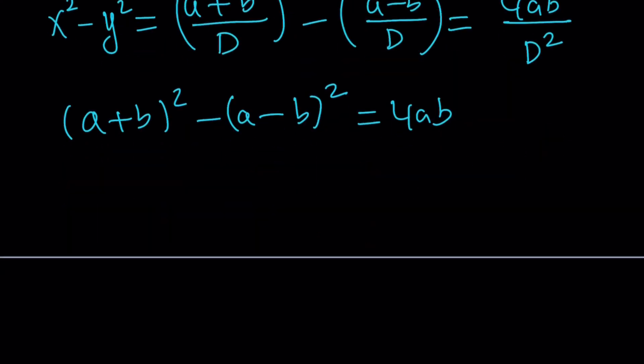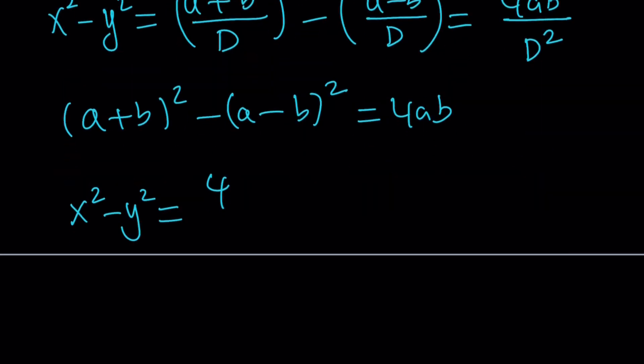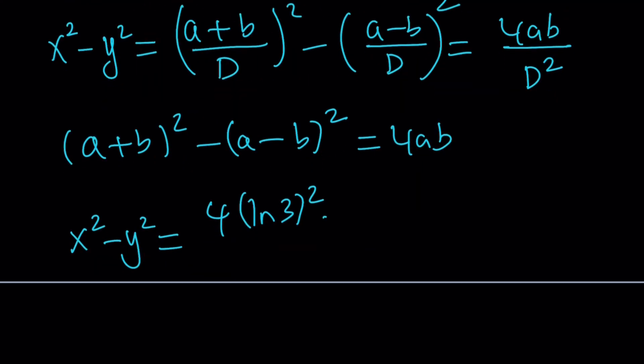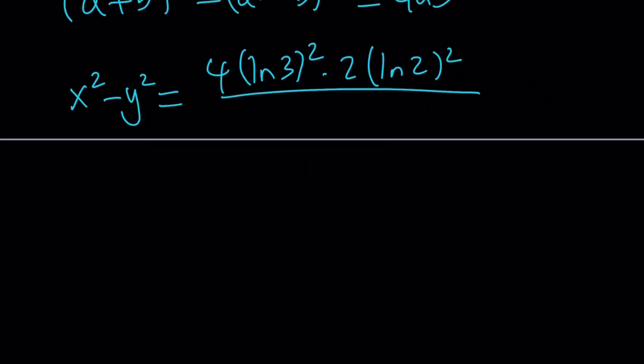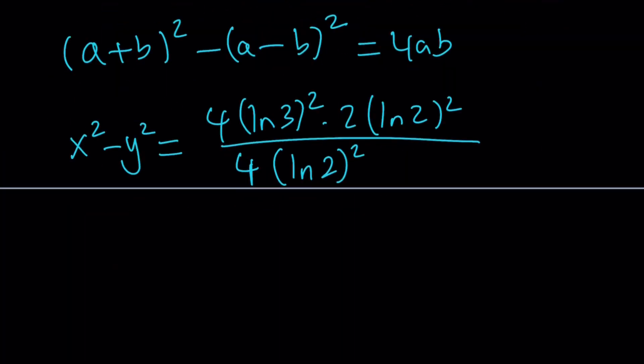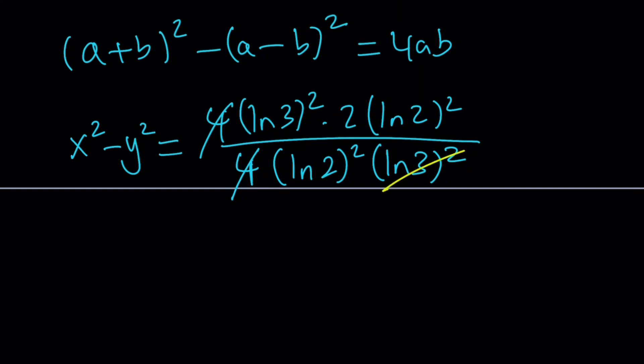4ab would be 4 times a, which is ln 3 squared, times b, which is 2 times ln 2 squared. And then denominator squared is 4 times ln 2 squared multiplied by ln 3 squared. So 4 cancels out, ln 3 squared cancels out, ln 2 squared cancels out, and we end up with a 2 at the end.